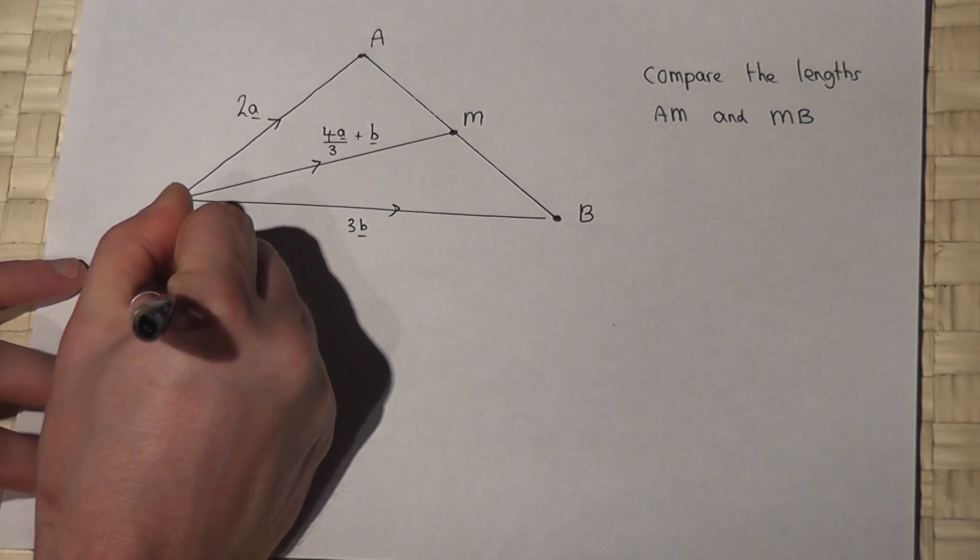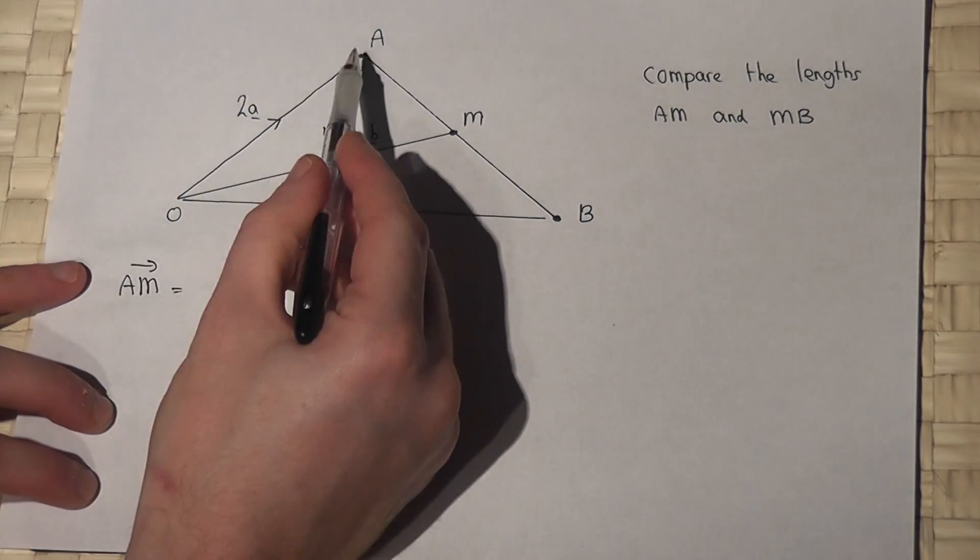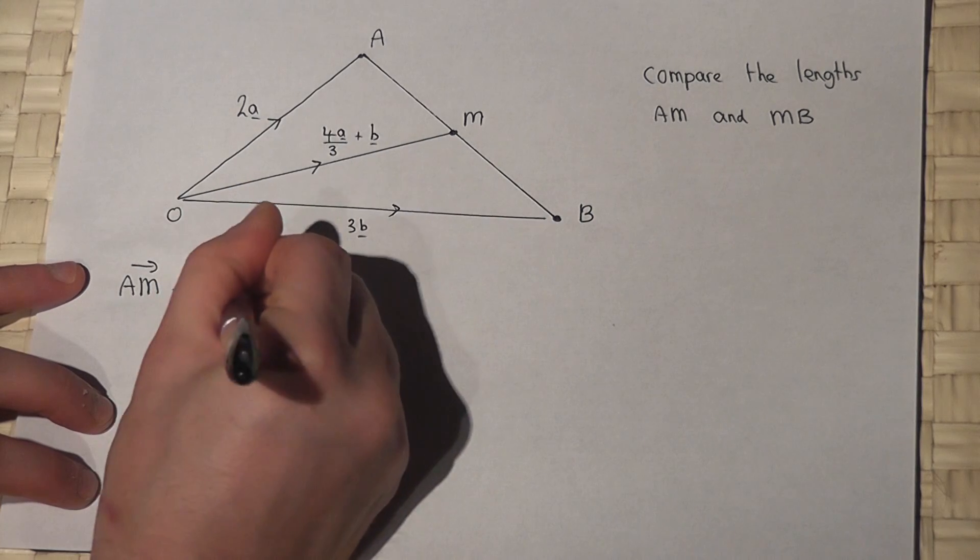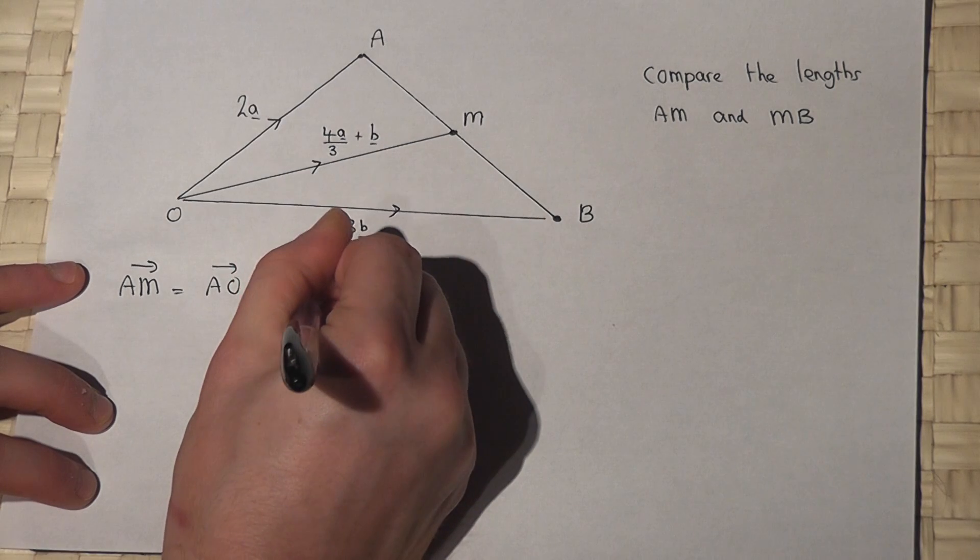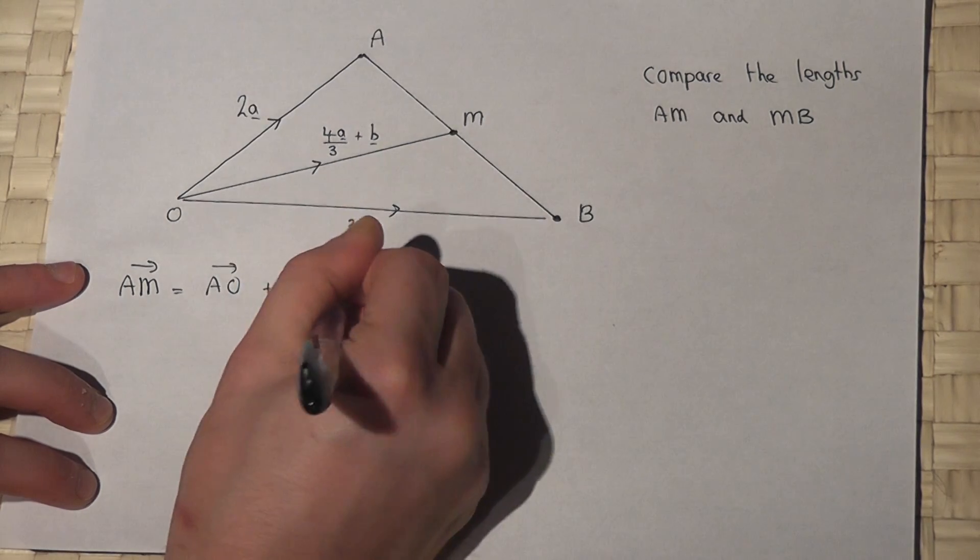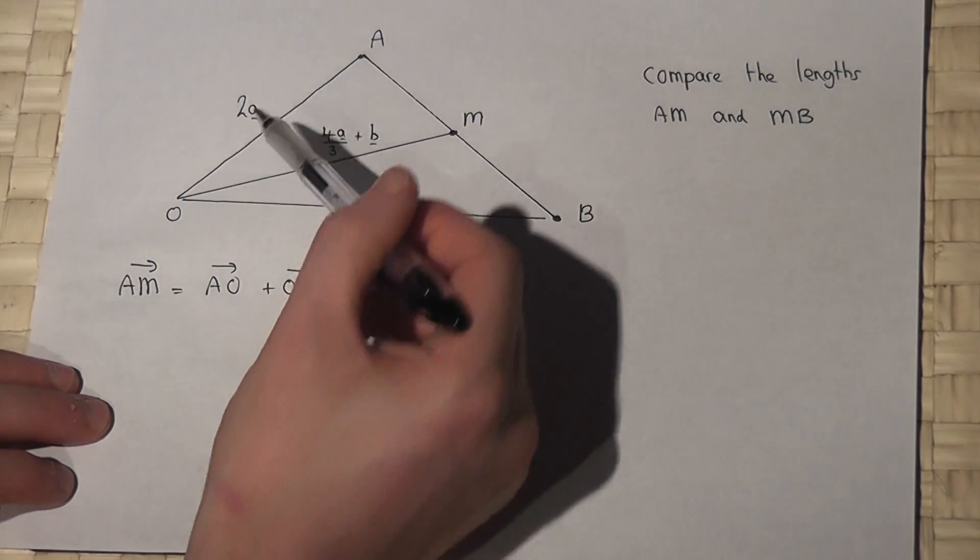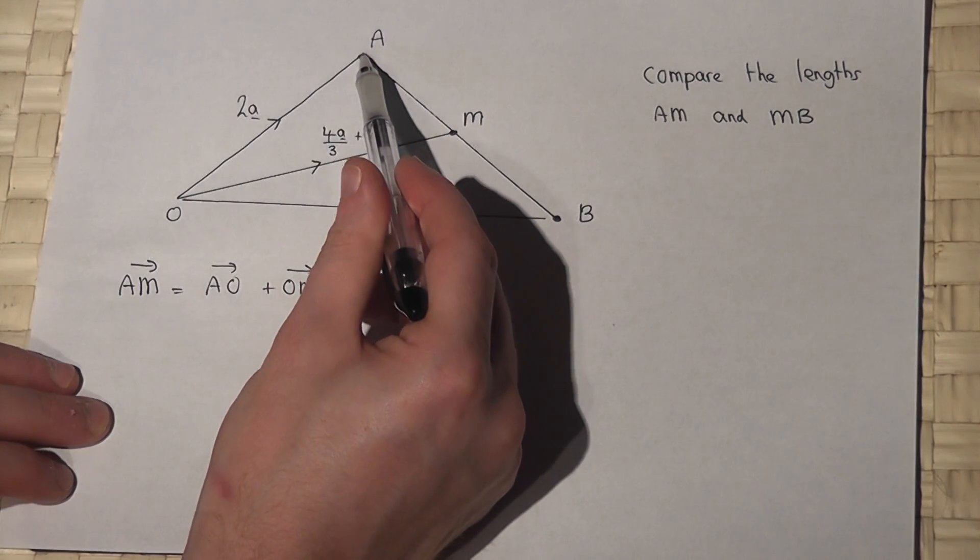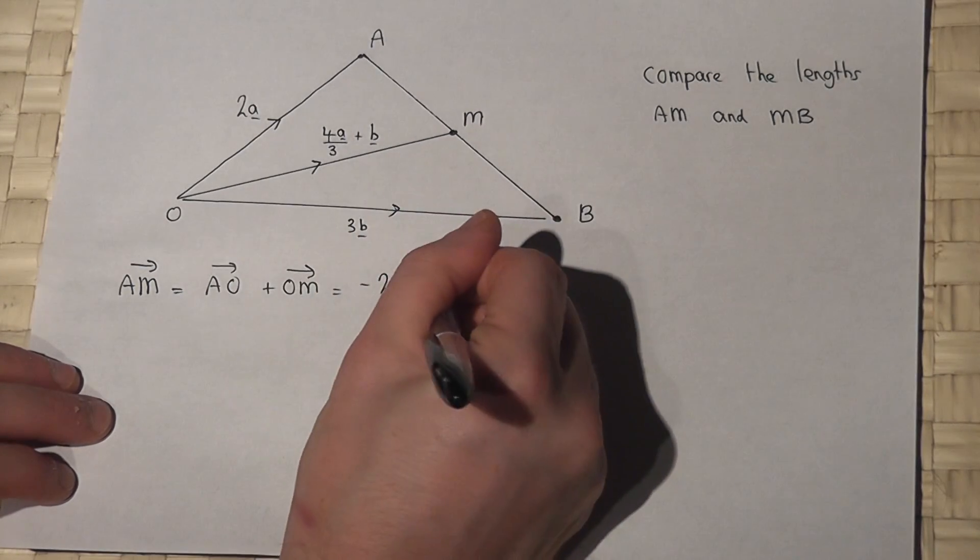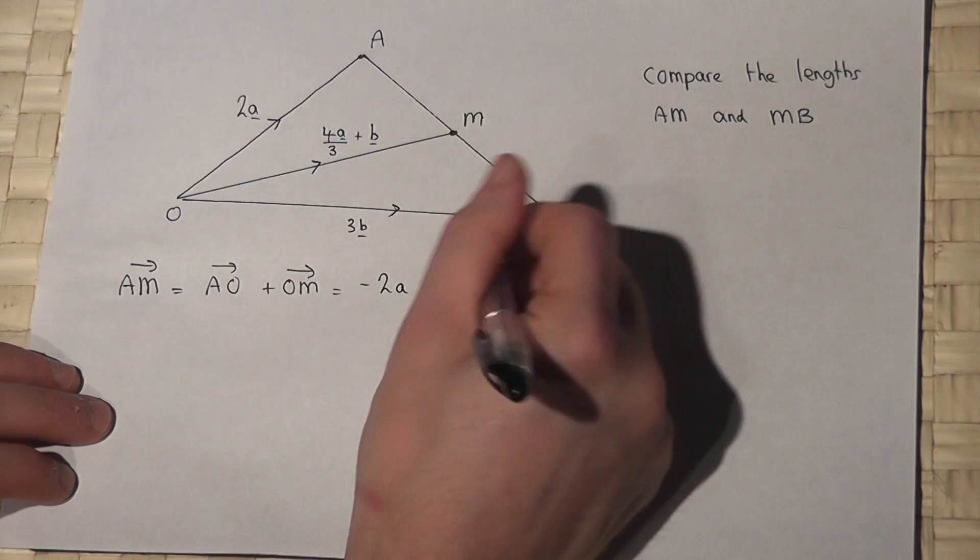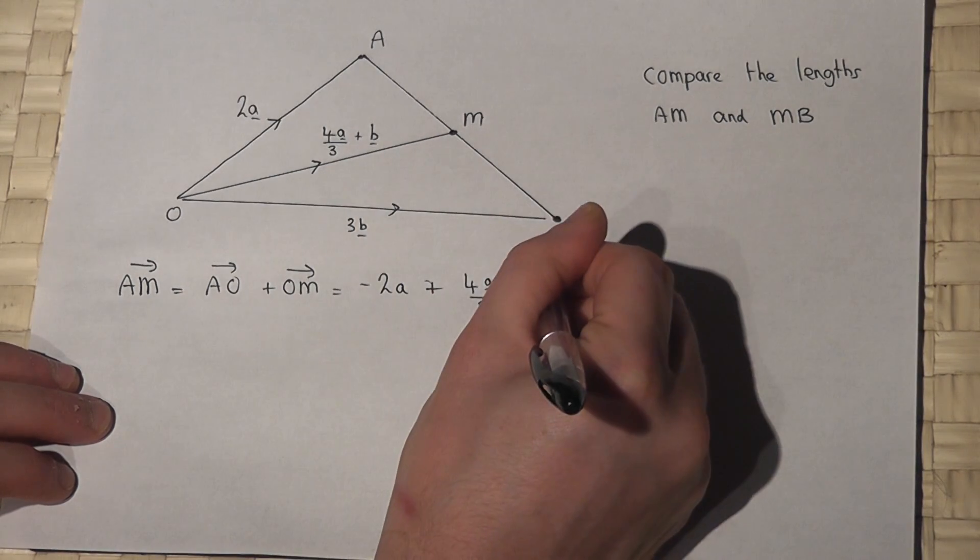Now the vector A to M which goes off this random angle is the same as A to O and then from O to M, and I can write down A to O in terms of lowercase a. O to A is 2a, so A to O is minus 2a plus O to M. Well, O to M is just 4a over 3 plus b.